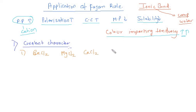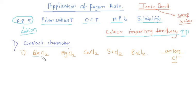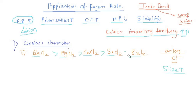The anion is fixed — it is Cl⁻. The cations here are the alkaline earth metals, and they all have the same charge of +2, but their size keeps on increasing. As the size of the cation keeps increasing, the covalent character keeps decreasing. The size of beryllium is the smallest, so BeCl₂ will have the highest covalent character. This gives us the order of covalent character.